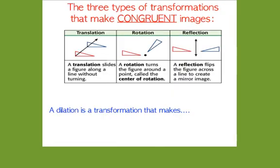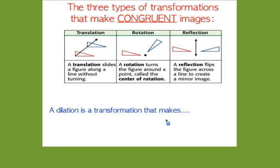These three transformations — rotation, reflection, and translation — create congruent images. Dilation creates similar figures, not congruent figures, so for dilation you need proportions. For congruent images produced by those three transformations, you just need a congruence statement.